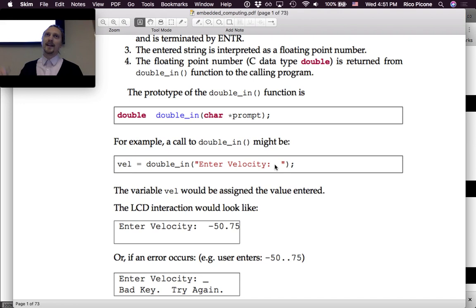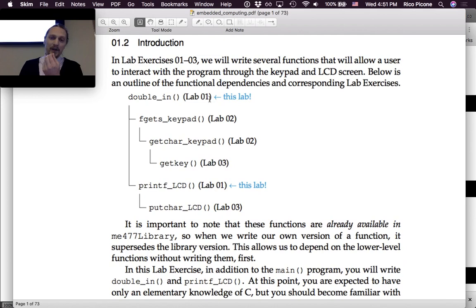But there's a lower level one that every time you hit a key it has to interpret it and print it. We'll talk more about that in the coming labs, but we don't have to deal with that at this level. We're at the higher level, fortunately. So we're doing double_in and printf_lcd, and we can use fgets_keypad, getchar_keypad, getkey, and putchar_lcd from the library. We interact with them only as input and output. We don't have to actually write them in this lab.